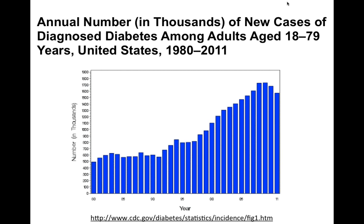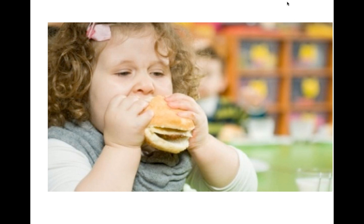Unhealthy food and preservatives, says one attendee. Sugar. Inactivity. Inactivity and processed foods, dietary norms, another one for refined sugars. Very good. Well, here's a picture that kind of captures a lot of what the people here on the webinar just said.